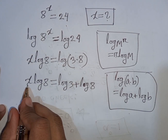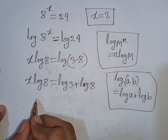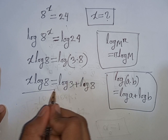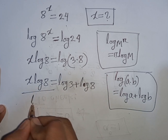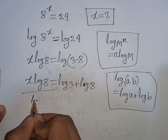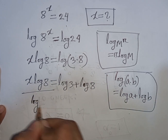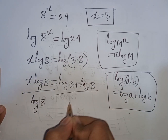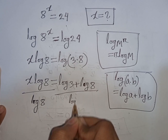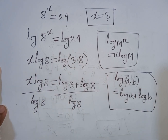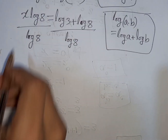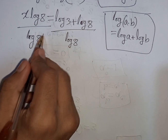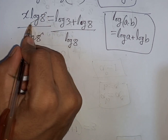We need the value of x, so we divide both sides by log 8. Dividing log 8 by log 8 — we see that this log 8 and this log 8 will be cancelled.